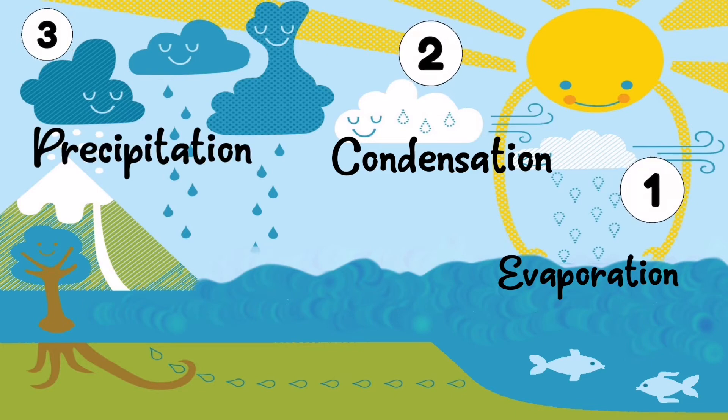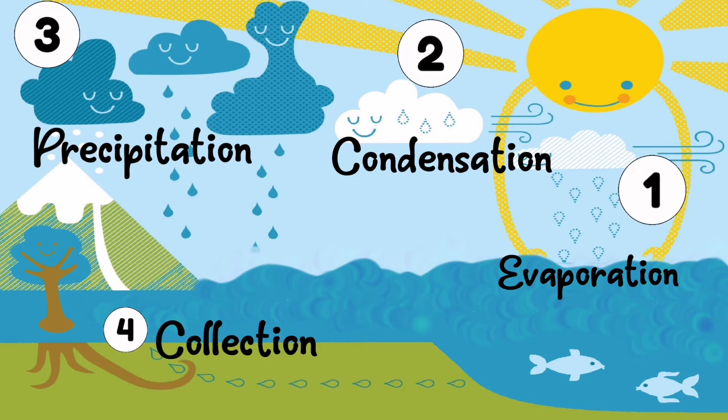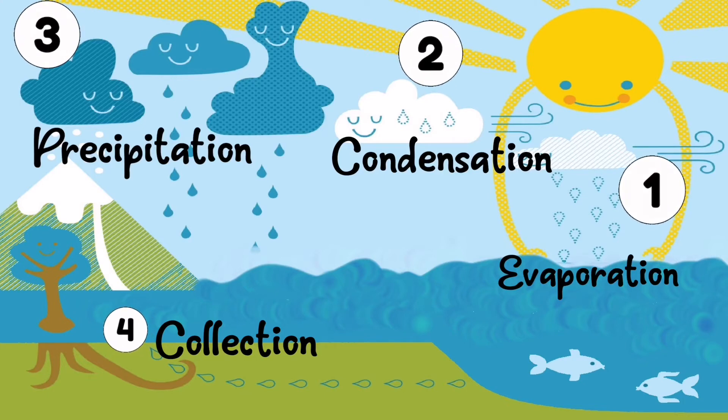Rain, snow, sleet and hail falling from clouds is called precipitation. The rain will then flow back into seas, rivers, lakes and the process starts again.